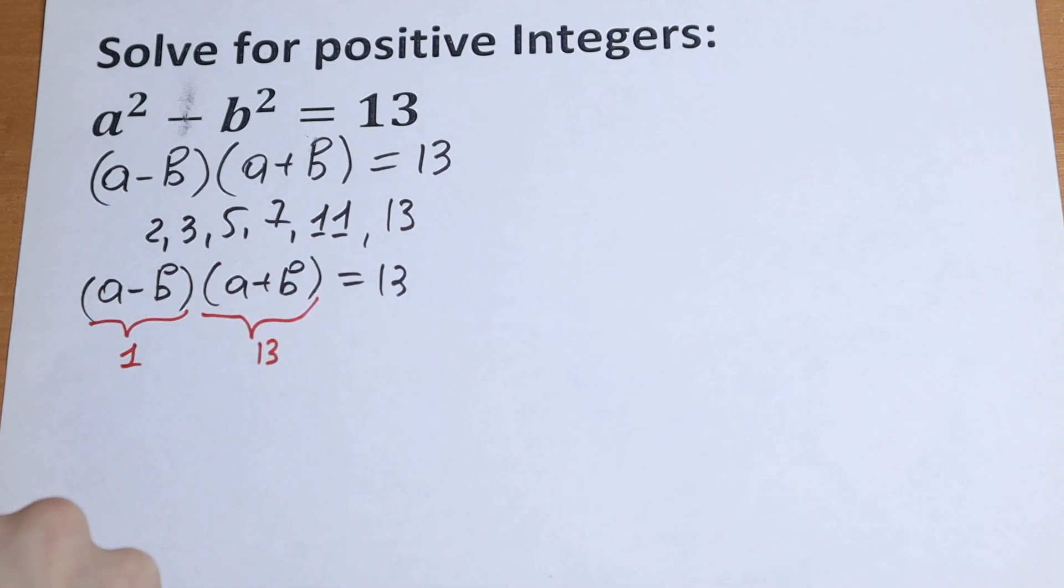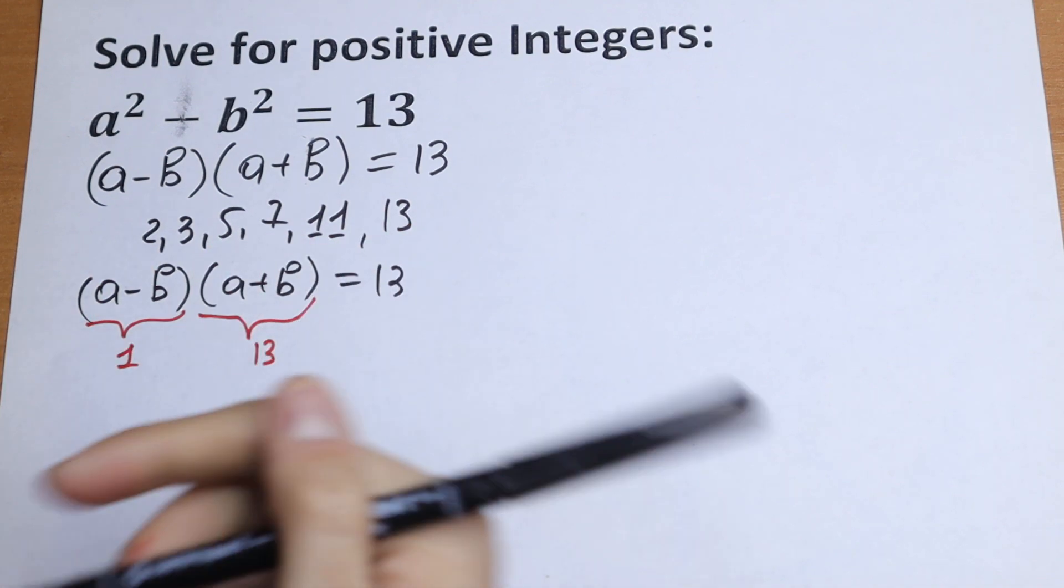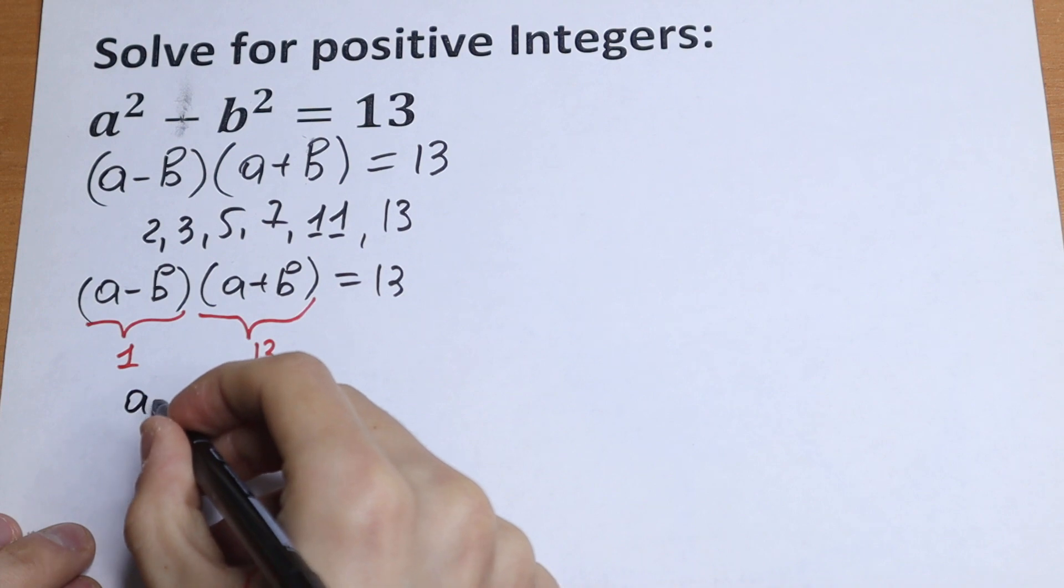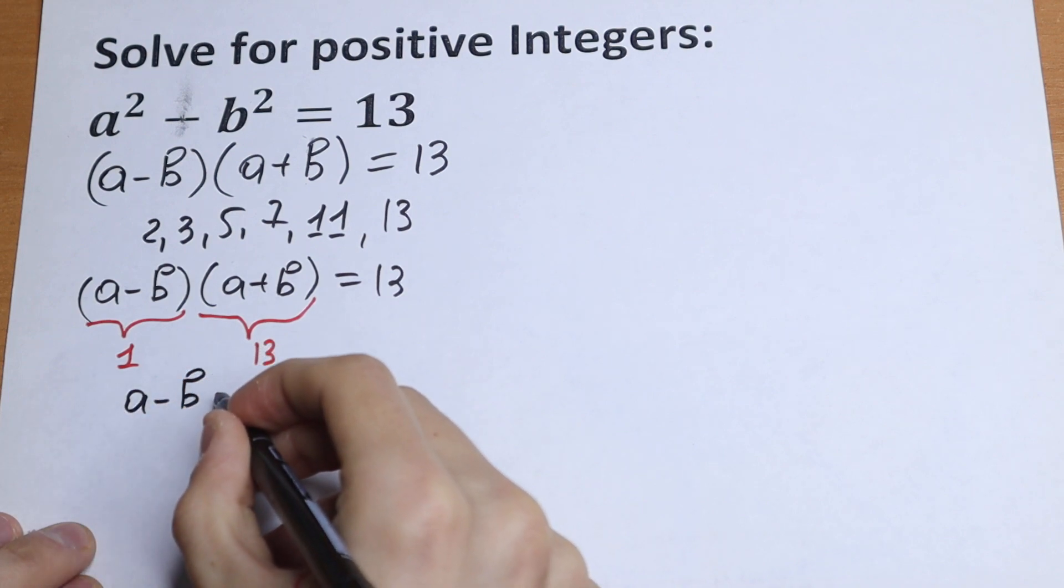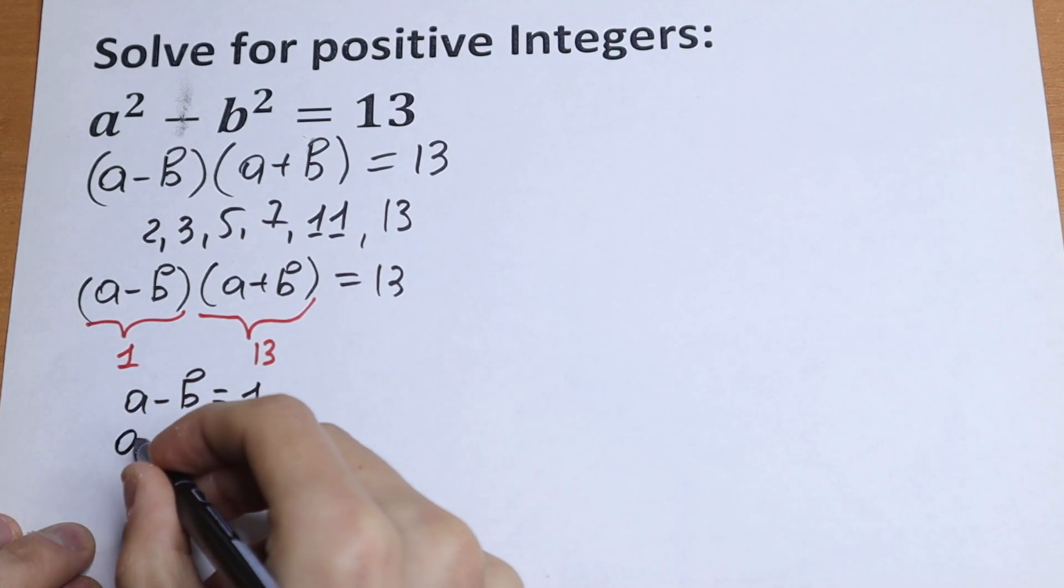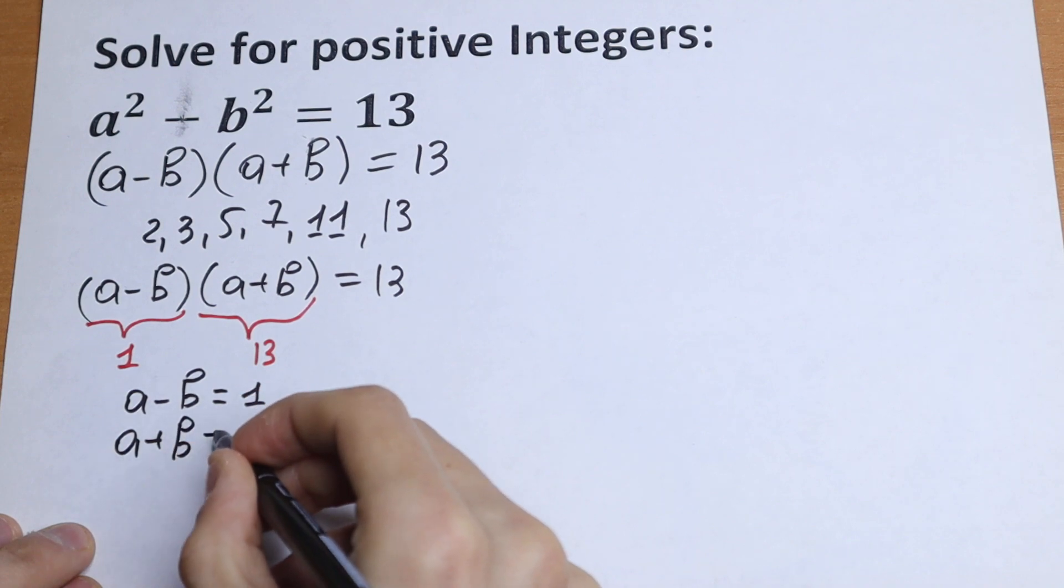We will have an interesting system of equations. We'll have a minus b equal to 1, and a plus b equal to 13.